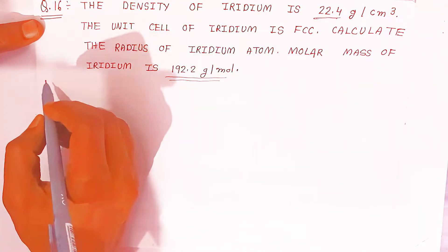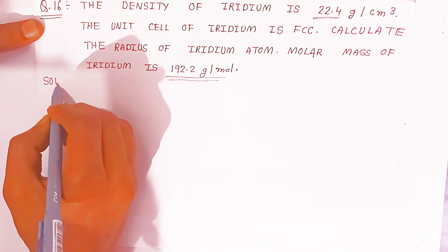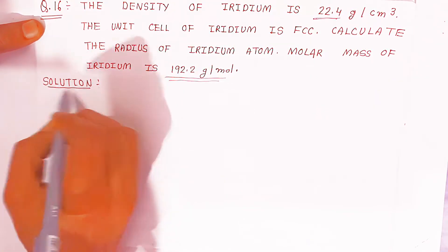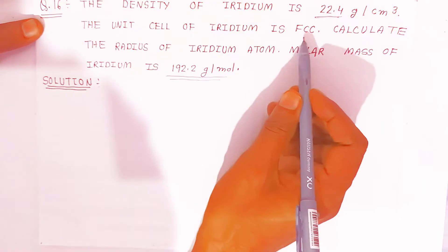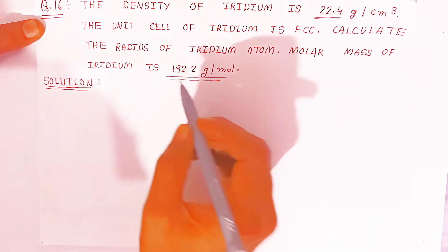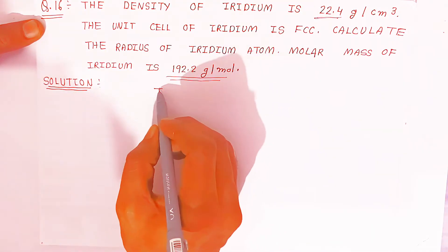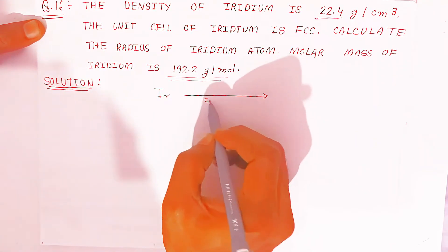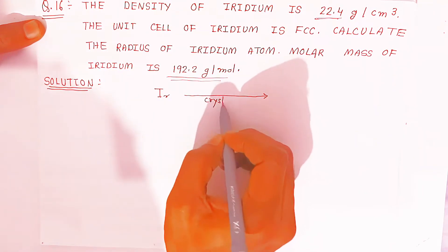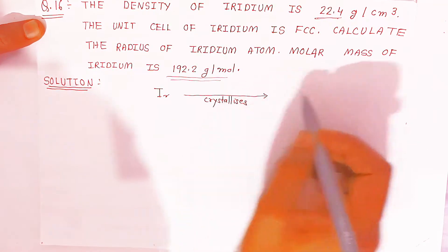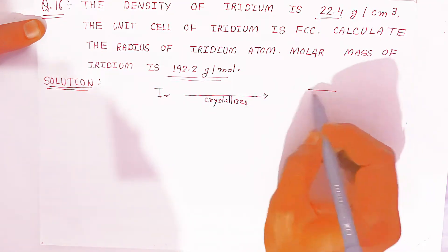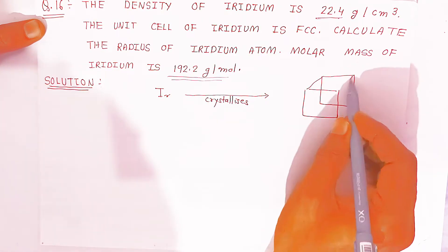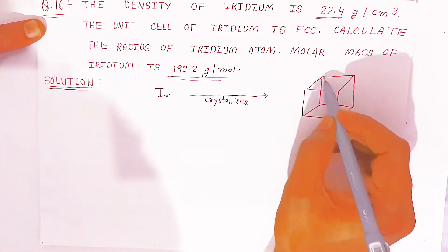Now first of all, let's understand how to solve these questions. The unit cell of iridium is FCC structure, so the unit cell is made up of iridium atoms. When iridium crystallizes it forms an FCC structure, like this — I have drawn the FCC structure here.